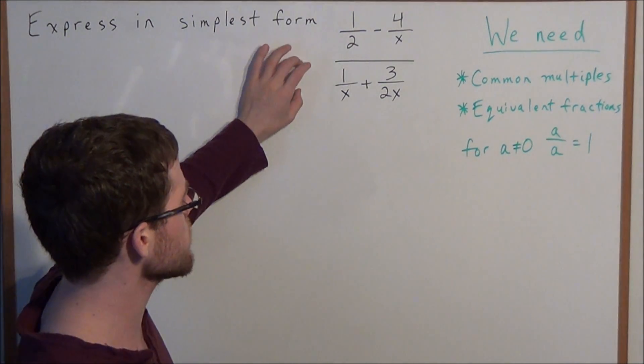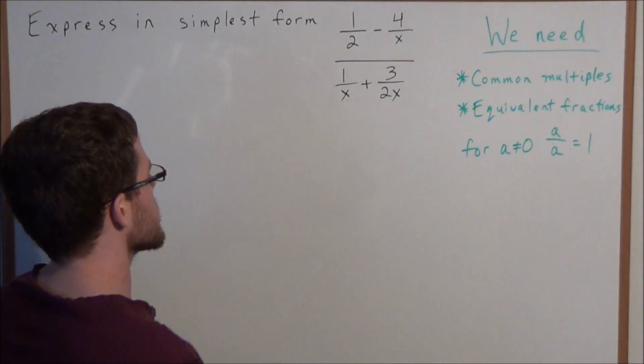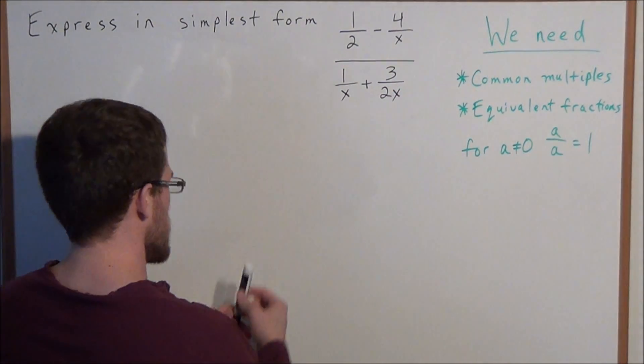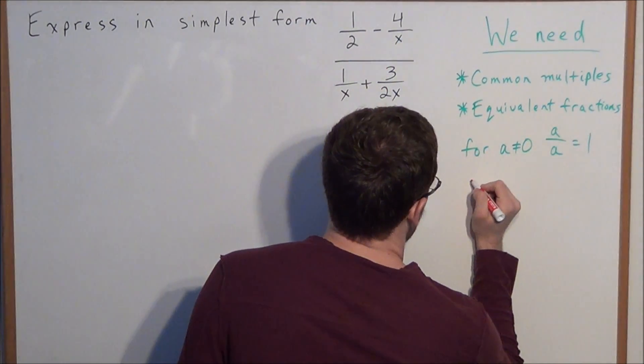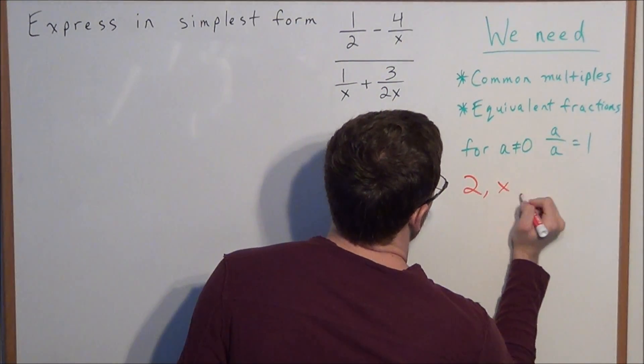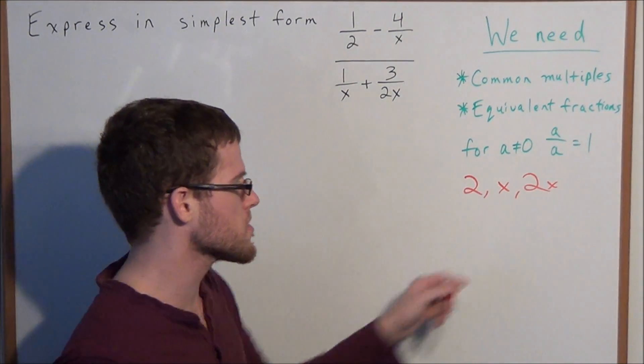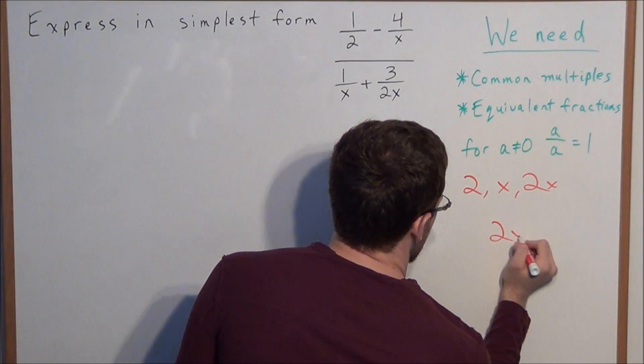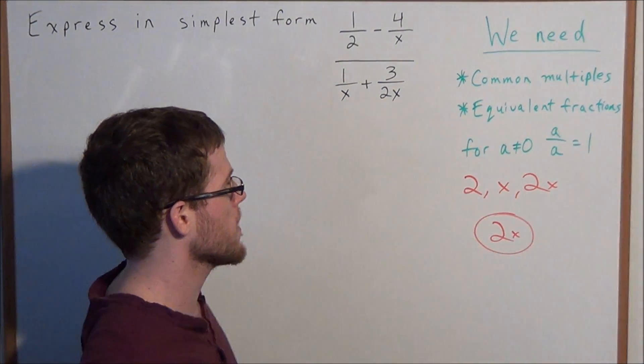Now to solve this problem we're going to need the concept of common multiples. We want to focus on each of these denominators. We have a denominator of 2, x, x, and 2x. So we need to find a common multiple of 2, x, and 2x. A common multiple for all of these would be 2x, because 2x is divisible by 2, x, and it's divisible by itself.